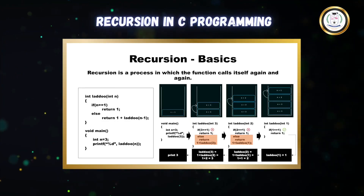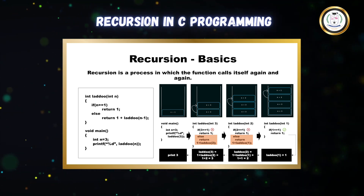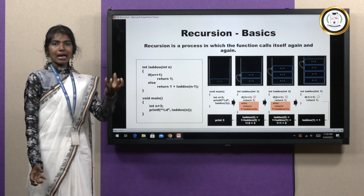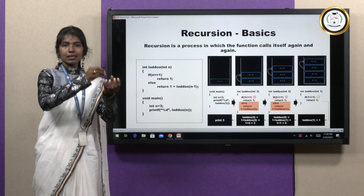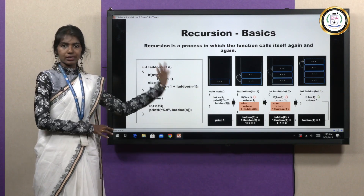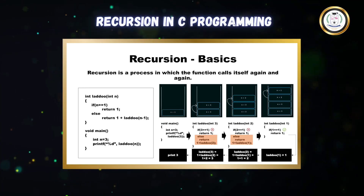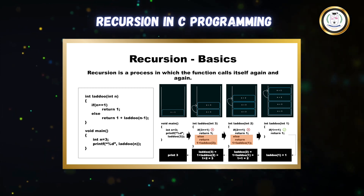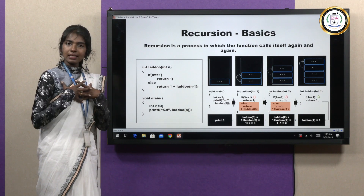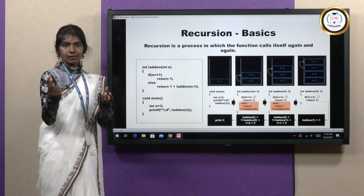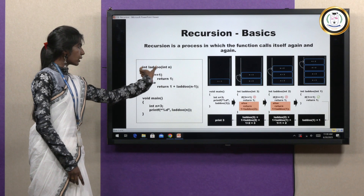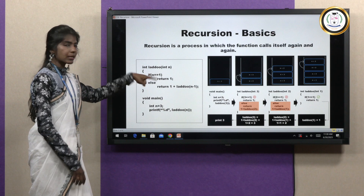Now let us see this in computer science terms. I have written a program for the same laddu example. You have a laddu and you are going to break it into boondis — that is what we are going to see today using recursion. This is the function I have written. The function's name is 'laddu' and its argument is n, meaning we are going to have n number of boondis in the laddu. Our task is to break down the laddu into boondis using recursion.